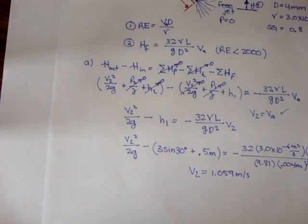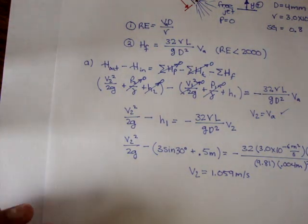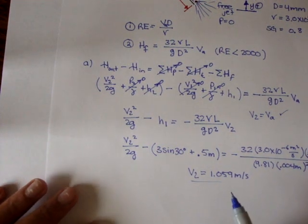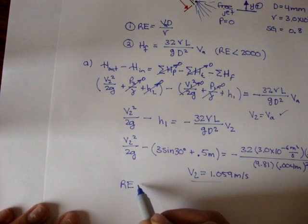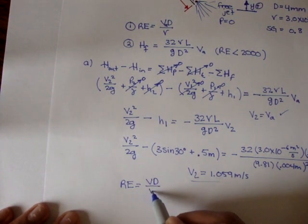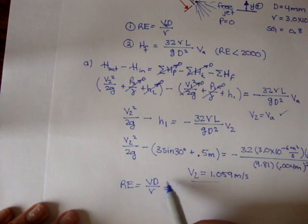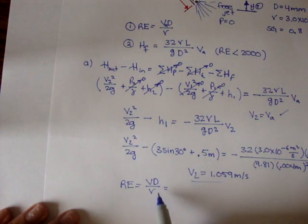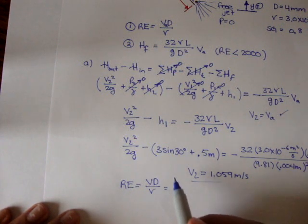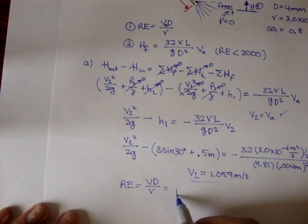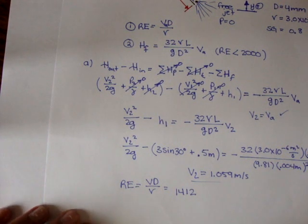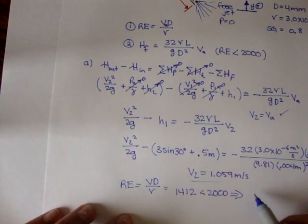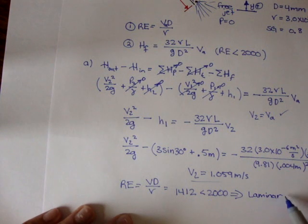Now let's check if the flow is laminar or turbulent using the Reynolds number: Re = VD over nu. With V = 1.059 m/s, D = 0.004 m, and nu = 3.0 times 10 to the negative 6, we get a Reynolds number of about 1412. That is less than 2,000, confirming our assumption was correct — the flow through the pipe is laminar.